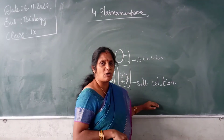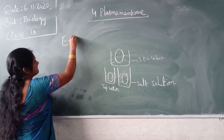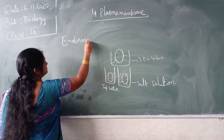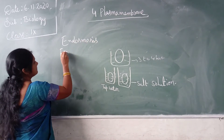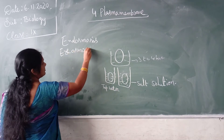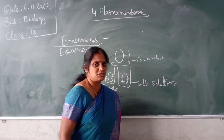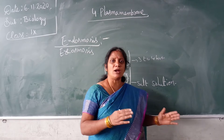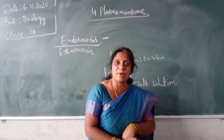These two processes are called endosmosis and exosmosis. What is endosmosis? During endosmosis, the water from outside enters into the cell through the plasma membrane.